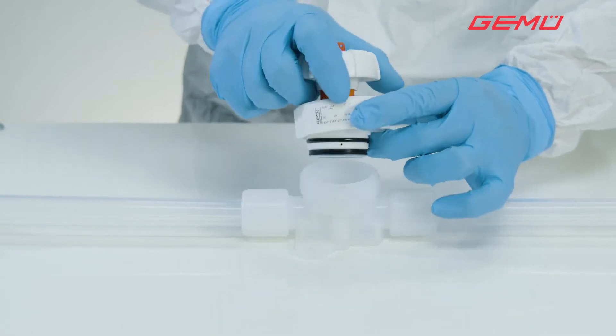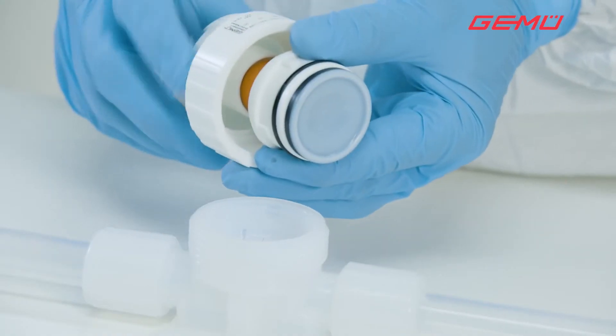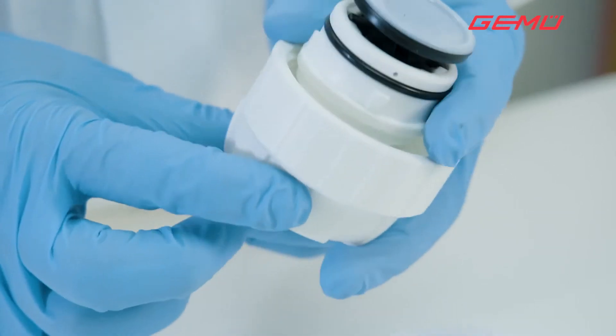Then remove the actuator from the valve body. Move the actuator to the closed position and unscrew the old diaphragm anti-clockwise.